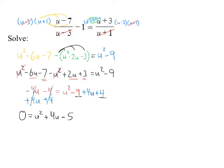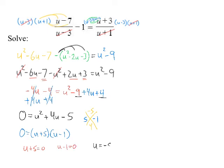We're getting close. Factor u squared plus 4u minus 5: that gives 5 and negative 1, so 0 equals (u plus 5)(u minus 1). The solutions are u equals negative 5 and u equals 1. Now check to make sure neither is extraneous — meaning part of the restricted values. Plugging negative 5 into either denominator does not create a 0, and plugging in 1 does not either. Both answers are valid.